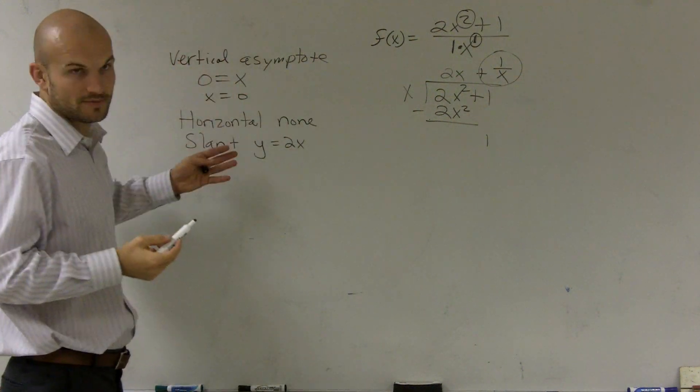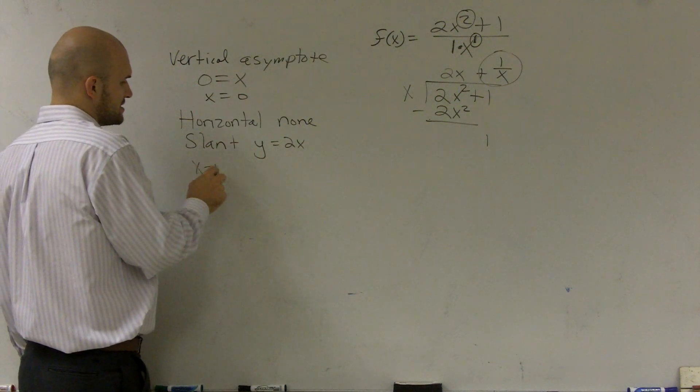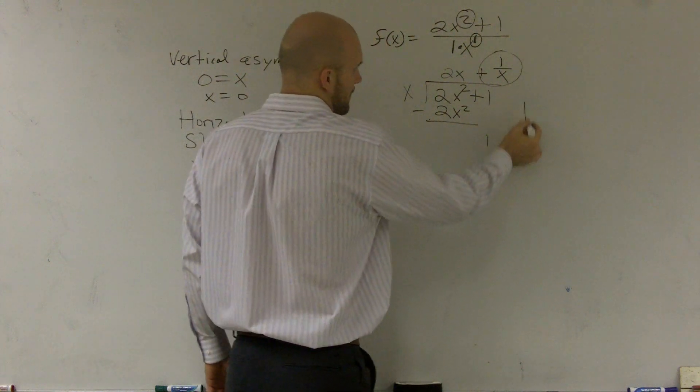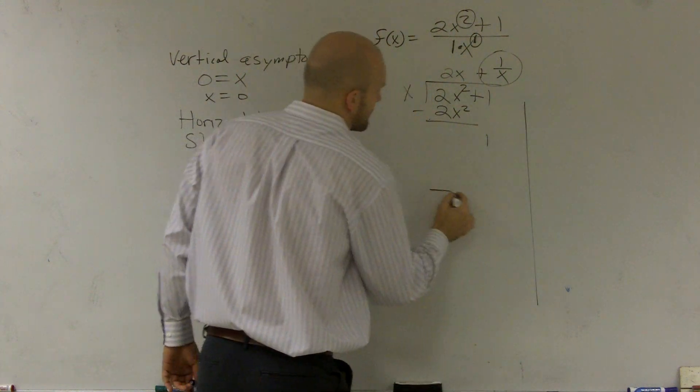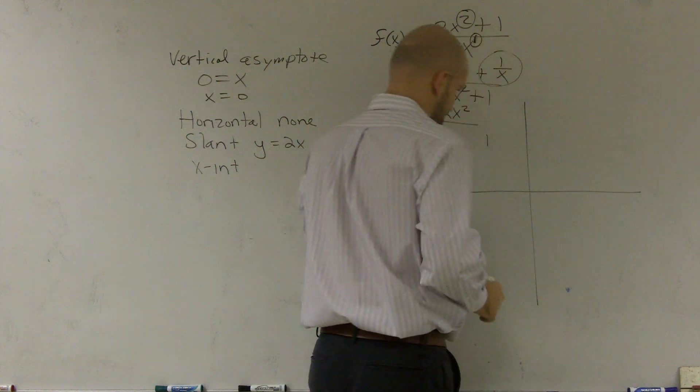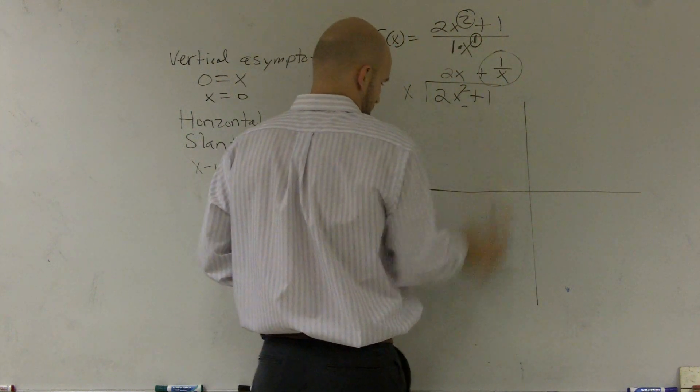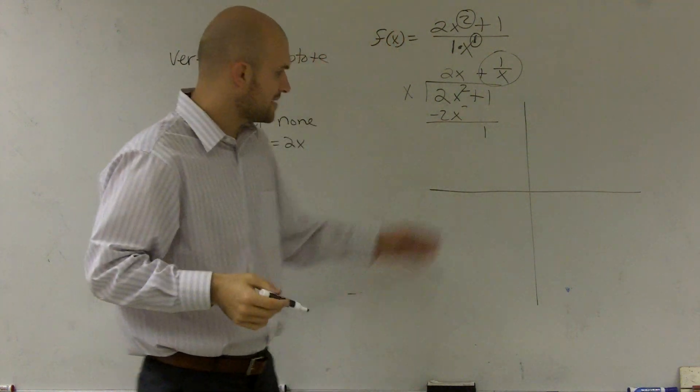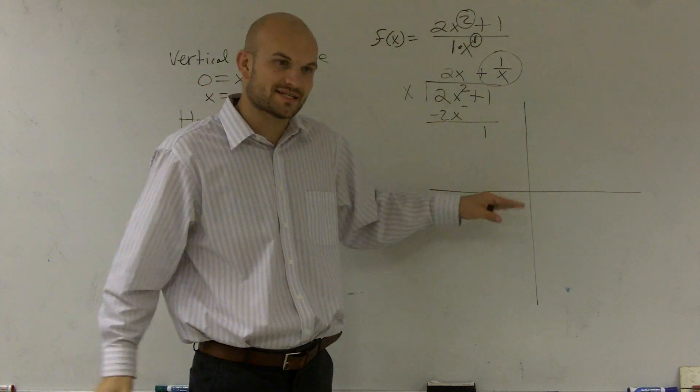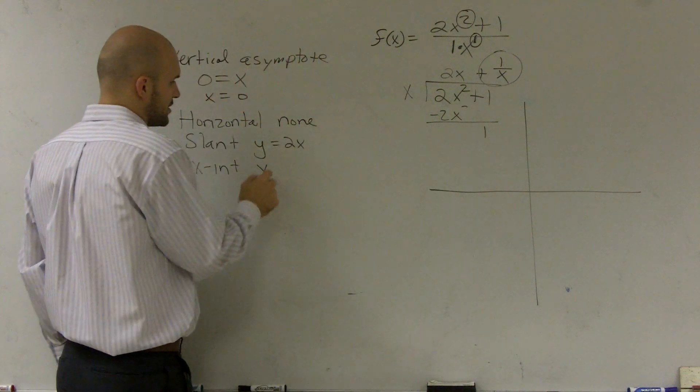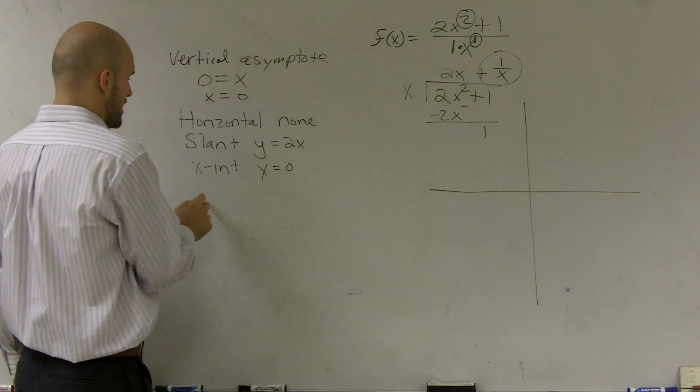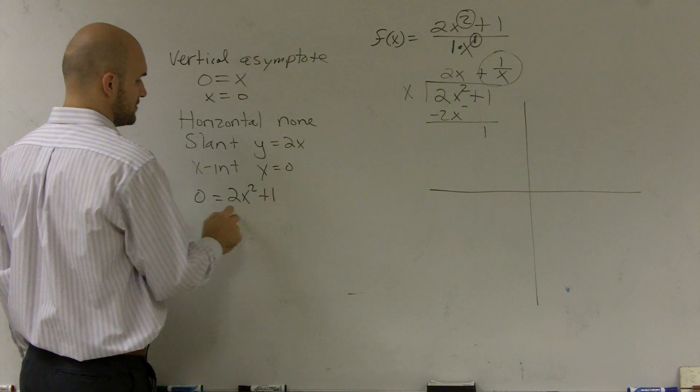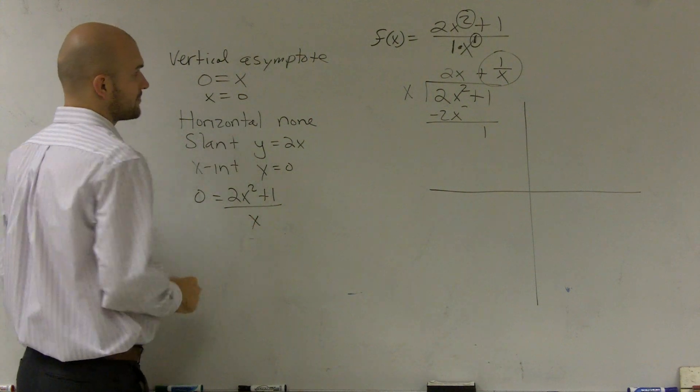Now, the next thing, so we know what our asymptotes are. The next thing, usually, is our x and y-intercepts. So let's find our x-intercept. Remember, I'm going to graph it right here. So remember, x-intercept is where it crossed the x-axis. That means our y value is equal to 0. So, therefore, I plug in 0 for y, which is the same as f of x. So 0 equals 2x squared plus 1 divided by x.